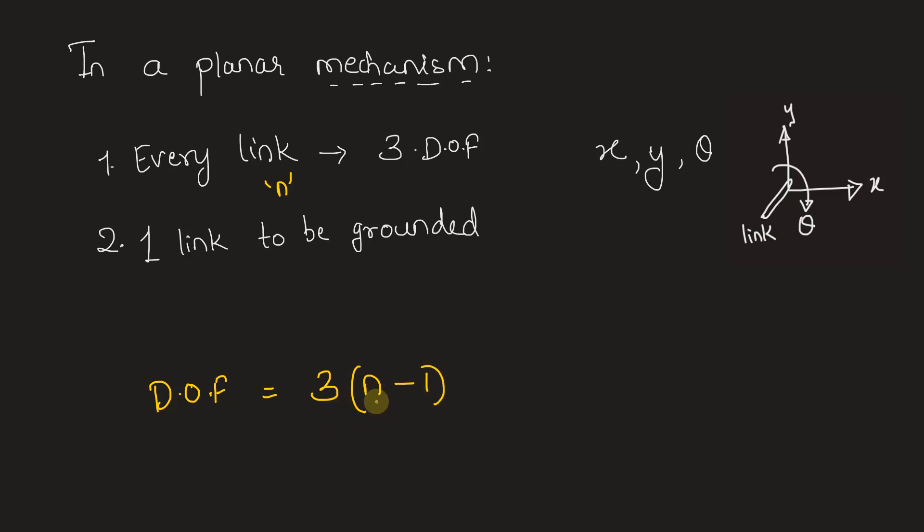Further, when successive links are joined to each other, their degrees of freedom are also reduced because that joint will together move the link either in x or y direction.